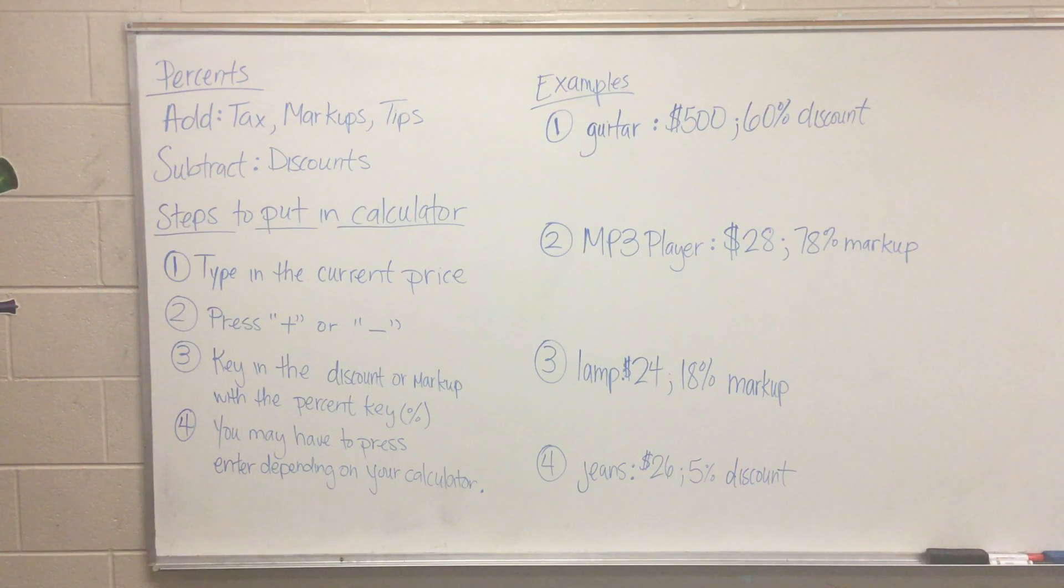So the steps to put them in the calculator: first you want to type the current price, then you're going to press the plus sign or the minus sign depending on whether you're supposed to add the tax, markup, tips, or subtract the discount. Then you're going to key in the discount or markup with the percent key, and lastly you may have to press enter depending on your calculator.